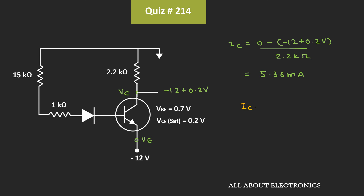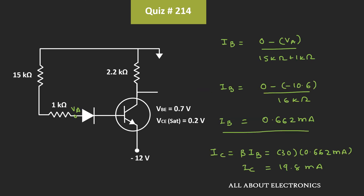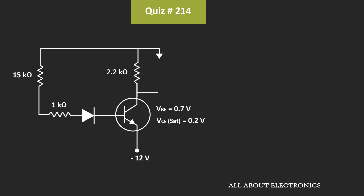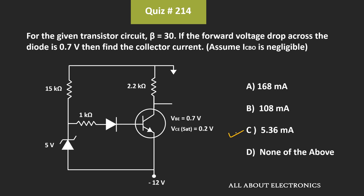This is the maximum value of the collector current which can flow through the transistor circuit. That means the collector current cannot be equal to 19.8mA. In other words, the transistor is operating in the saturation region, since the base current Ib is greater than Ic(sat) divided by the value of β in the active region. The value of the collector current Ic will be equal to Ic(sat), which is 5.36mA. That means for the given question, C is the correct answer.